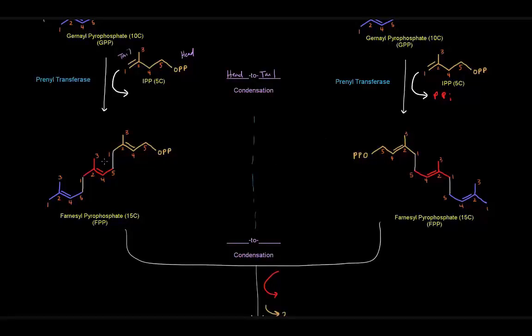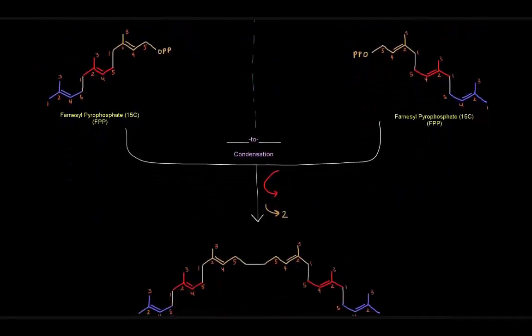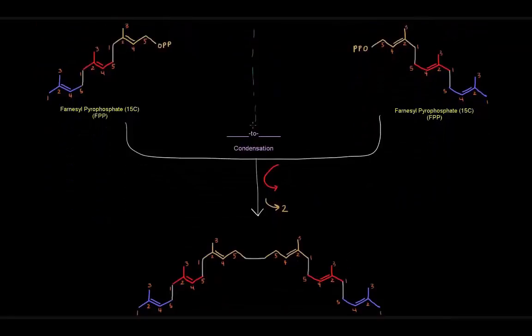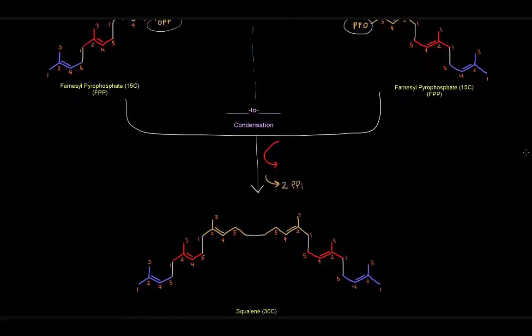So we're going to take these two 15 carbon units and link them together to make squalene down here. We're basically going to link this carbon, this fifth carbon here, to this fifth carbon here of these two brown portions, and we're going to lose both of these pyrophosphate groups. We're going to lose both of those. And we're going to link those two carbons there to give us squalene.